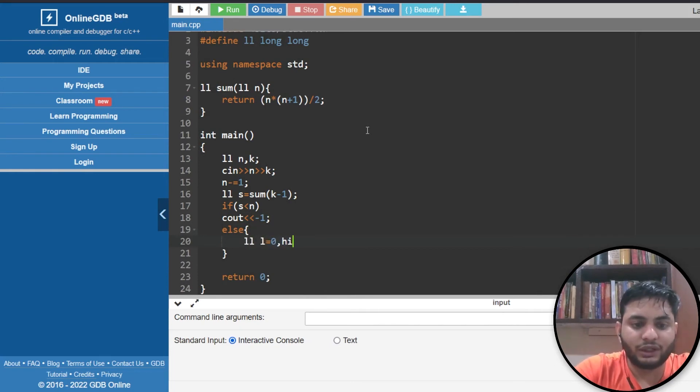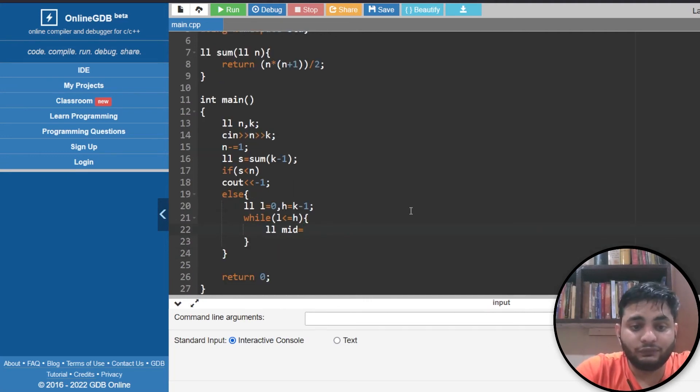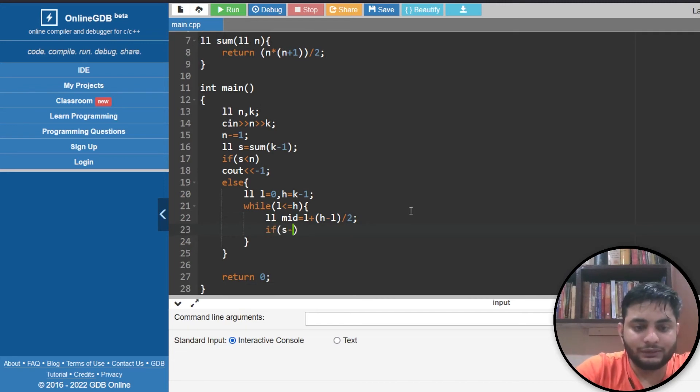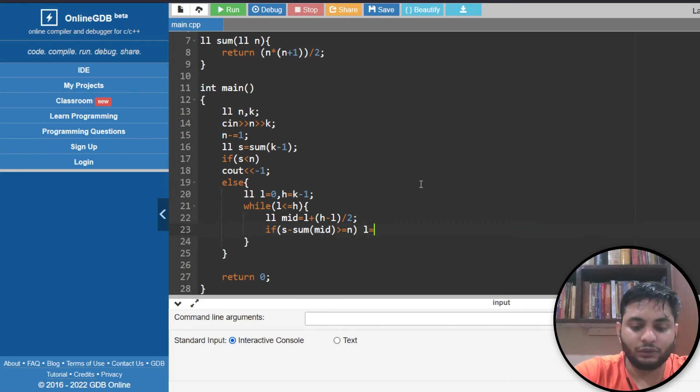For the first condition, if the sum is less than m, I output minus 1 because I cannot find an answer. Otherwise, the main task is binary search. I need low which is 0 and high which is k minus 1. While low is less than equal to high, get the mid as low plus (high minus low) divided by 2. If S minus sum of mid is greater than equal to L, meaning this part's sum is sufficient, I need to increase my low to mid plus 1.